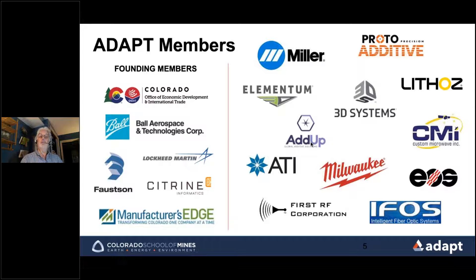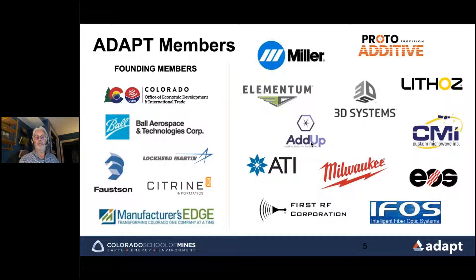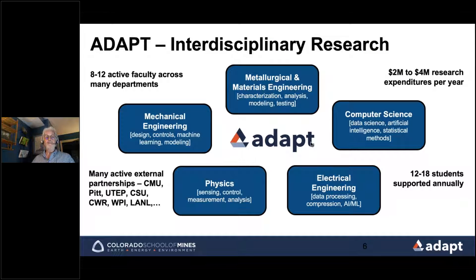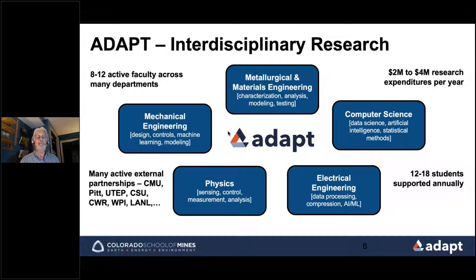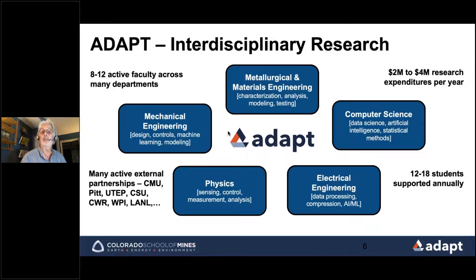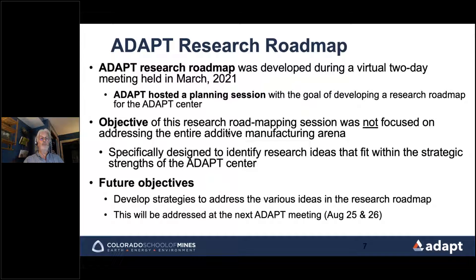Since then we have added members involved in various aspects of additive — from material production to parts producers, end users, and machine manufacturers. We are very involved in interdisciplinary research with eight to twelve active faculty members across departments including metallurgical and materials engineering, mechanical engineering, physics, electrical engineering, and computer science. Funding averages somewhere between two to four million dollars per year, supporting 12 to 18 students annually.